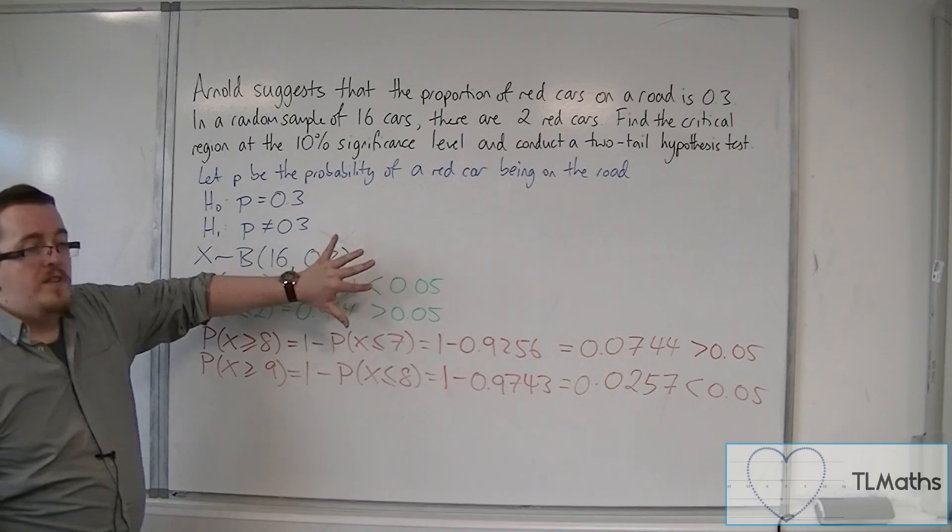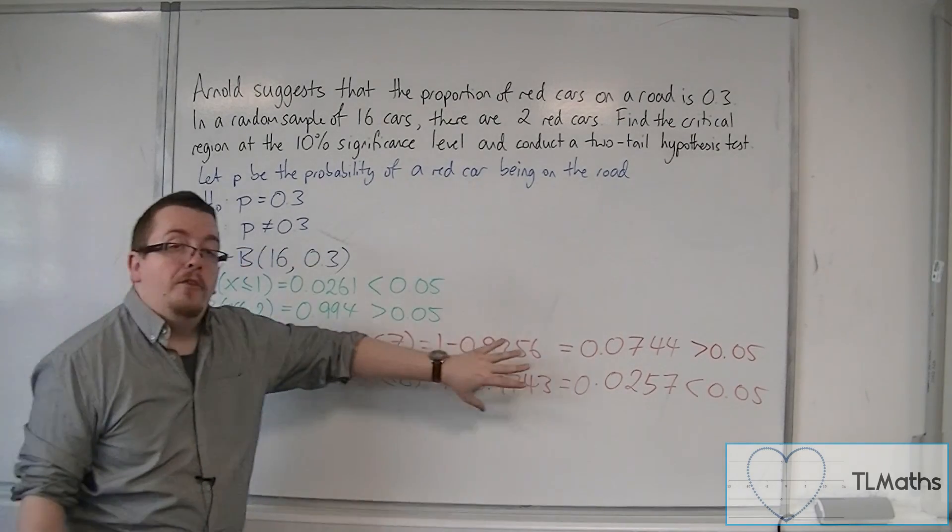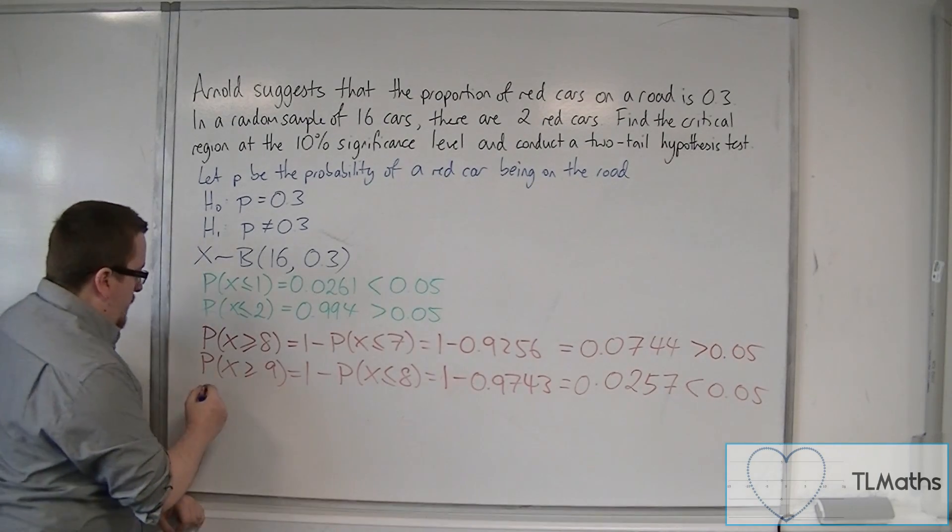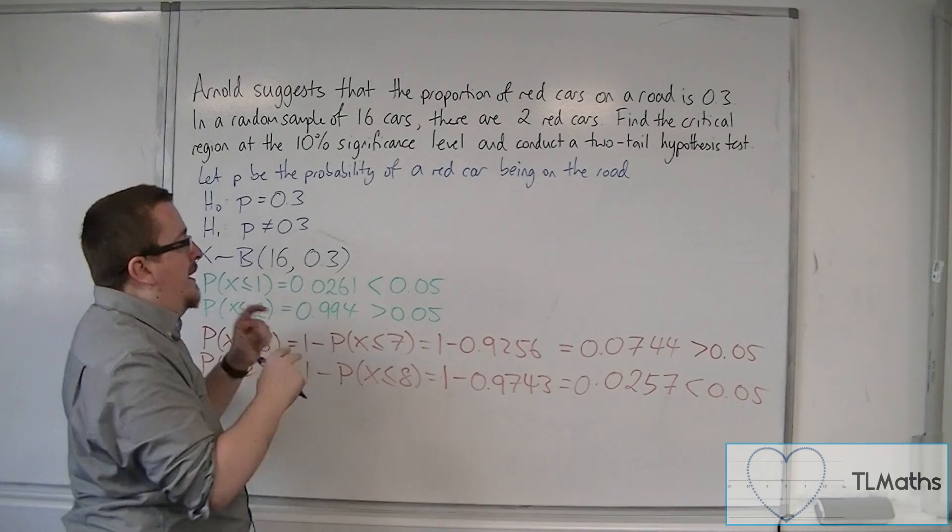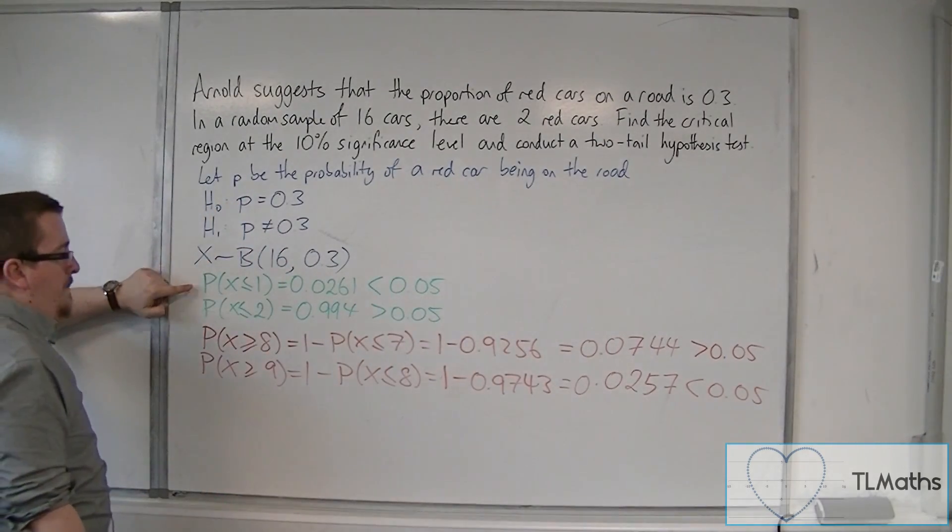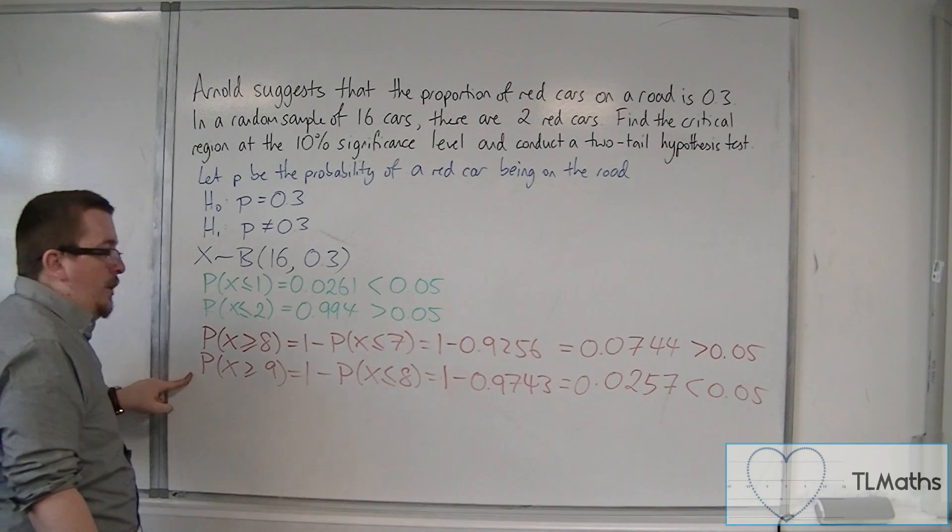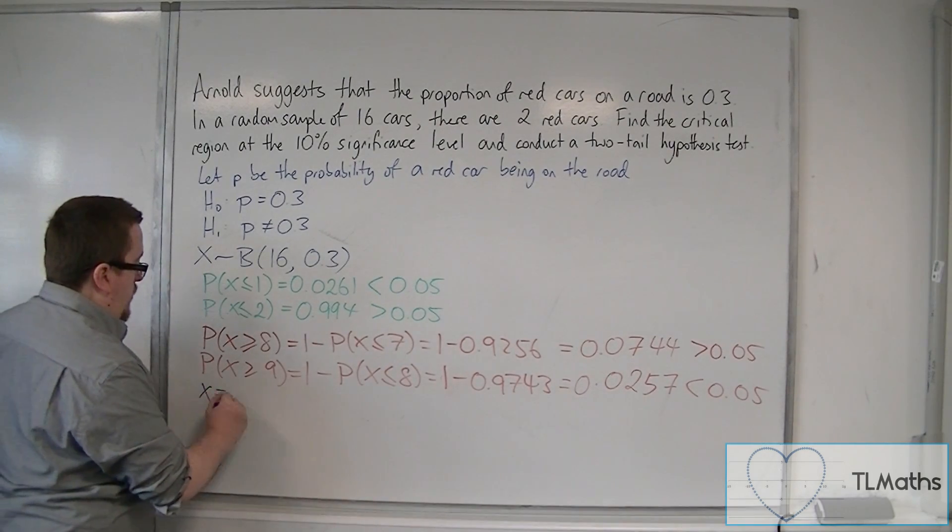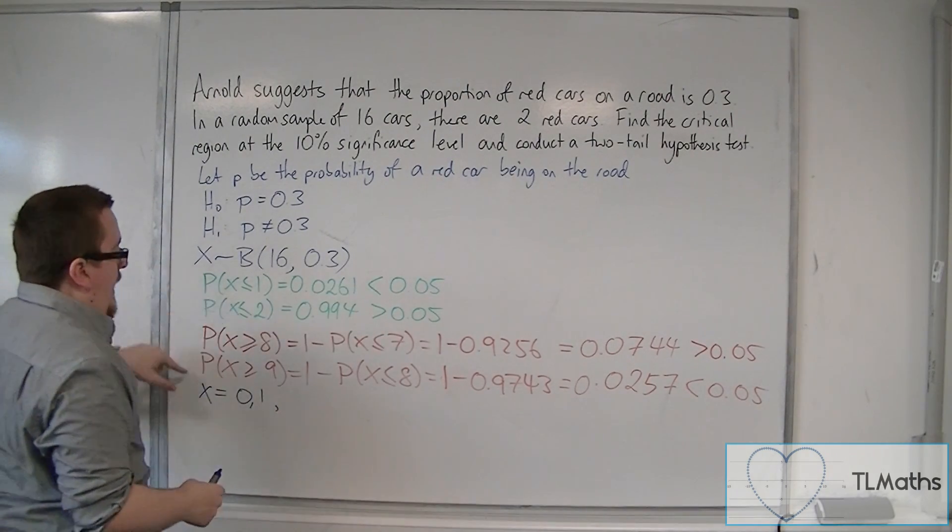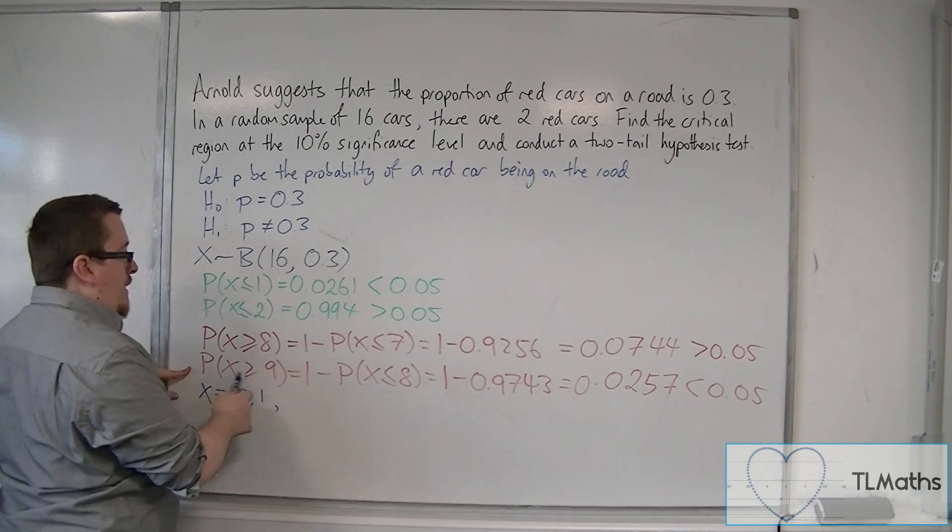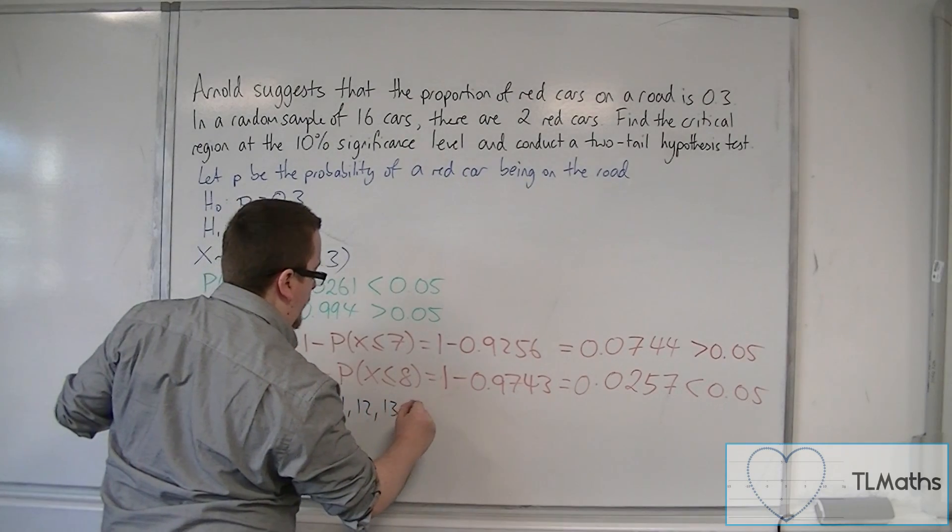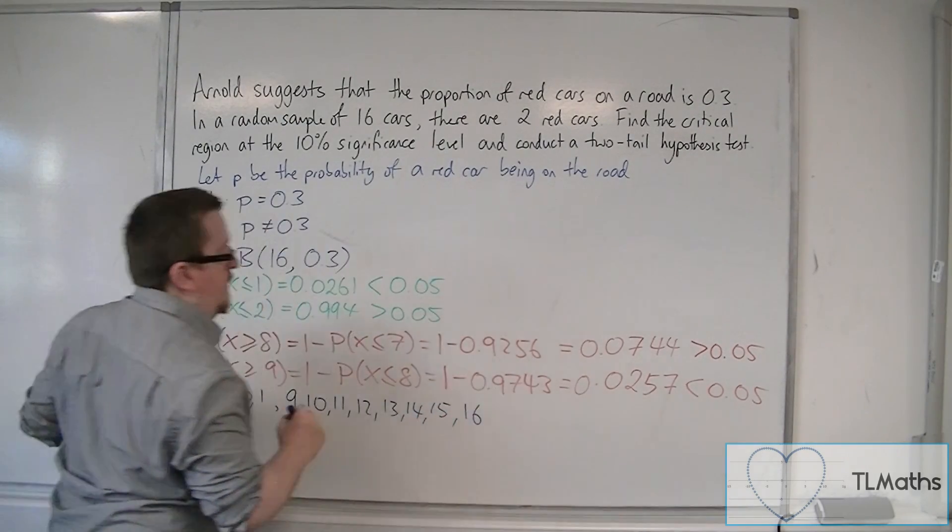Now, once you've done it from the bottom and from the top, you can then identify the critical region. The critical region is the ones that are less than the 5% significance. So, we have less than or equal to 1 and we have greater than or equal to 9. So, X equals 0 and 1 from this section, and we also have greater than or equal to 9. So, 9, 10, 11, 12, 13, 14, 15 and 16.